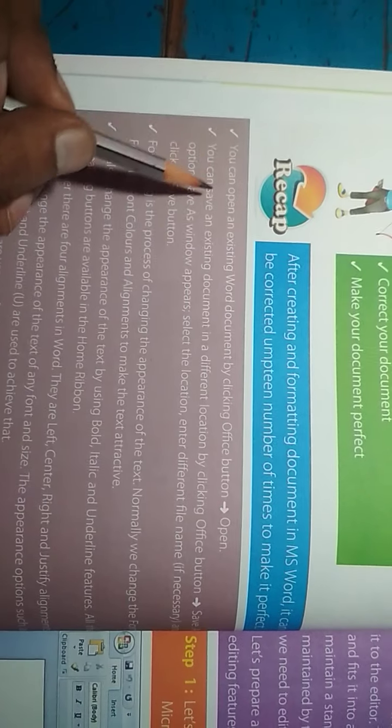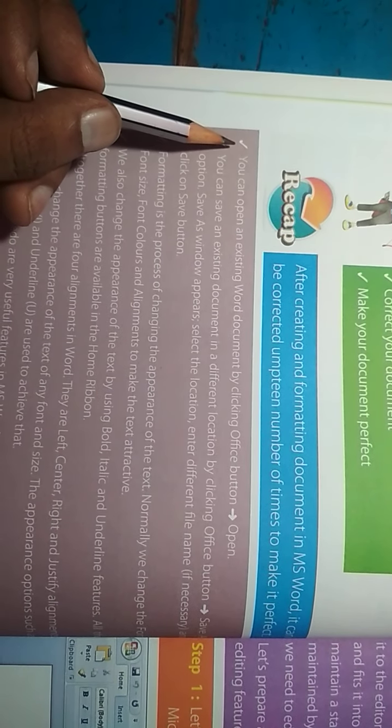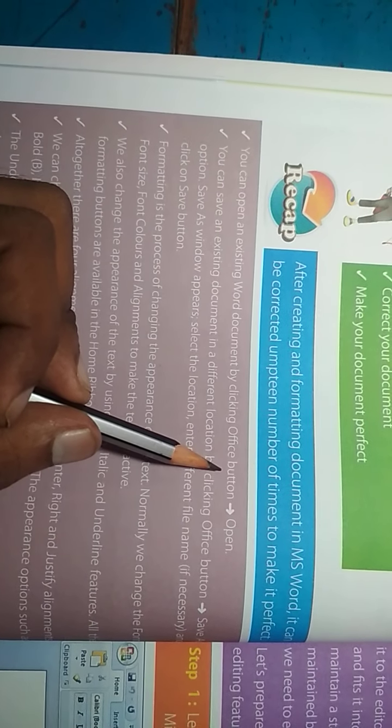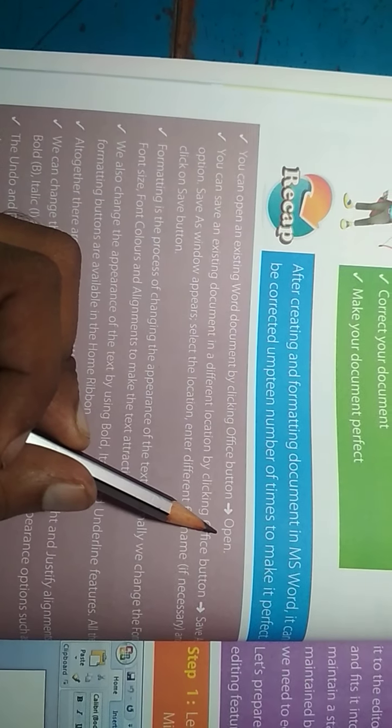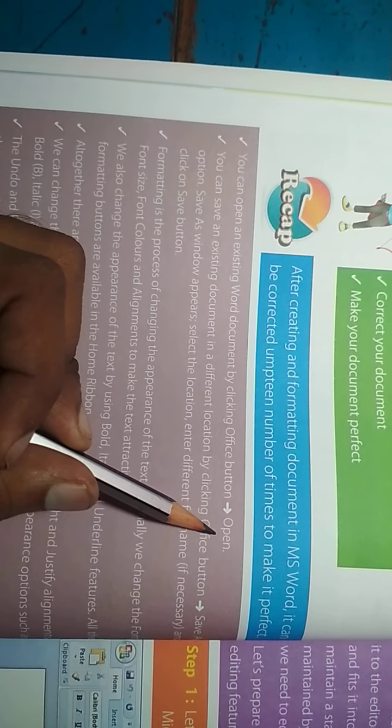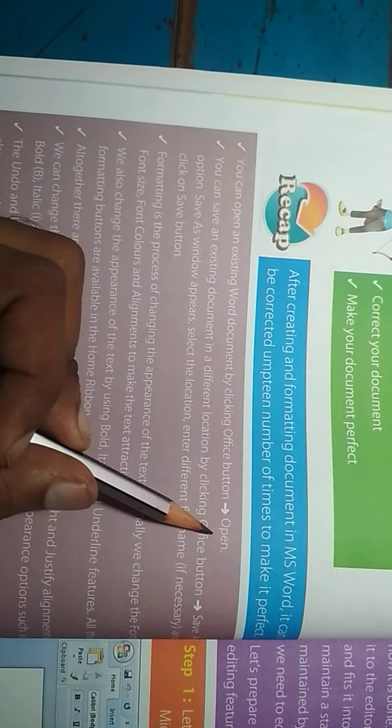Let us recall what we studied in the last session. Point number one: You can open an existing Word document by clicking the Office button and then Open. सबसे पहले हमने document open करना जाना — Office button click करते हैं, फिर Open button पर click करते हैं, और Word file open हो जाती है।